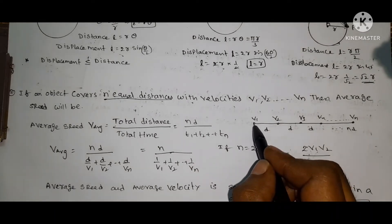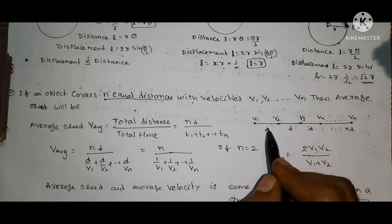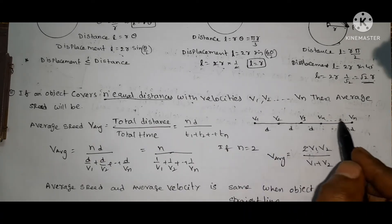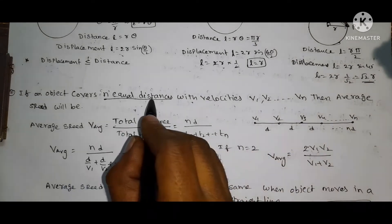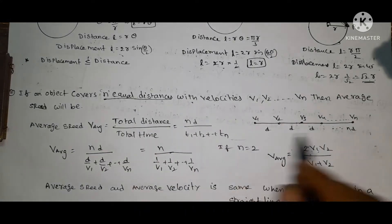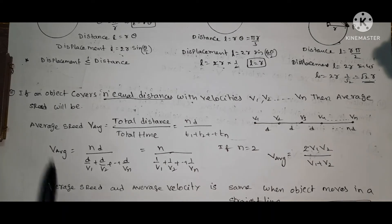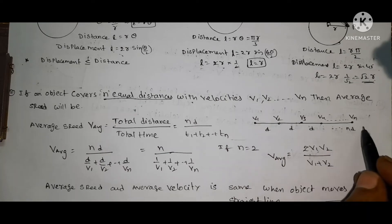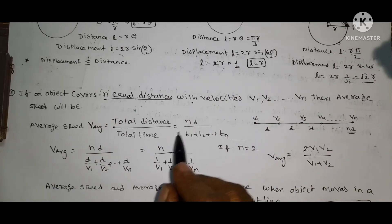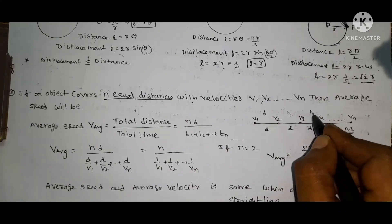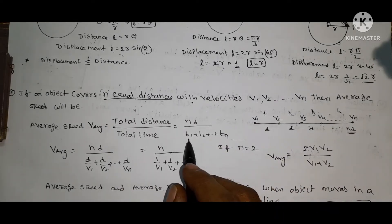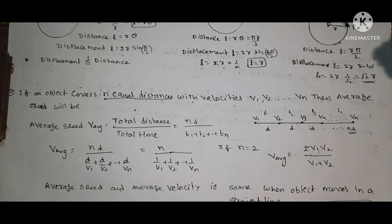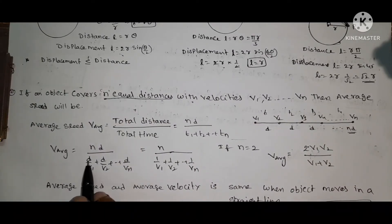Say a particle travels n equal distances d with velocities V1, V2, V3, ... Vn. Total distance equals nd. Total time equals t1 plus t2 plus ... tn, where each ti equals d divided by Vi. So average speed equals nd divided by d times (1/V1 plus 1/V2 plus ... 1/Vn). The d cancels, giving average speed equals n divided by (1/V1 plus 1/V2 plus ... 1/Vn).